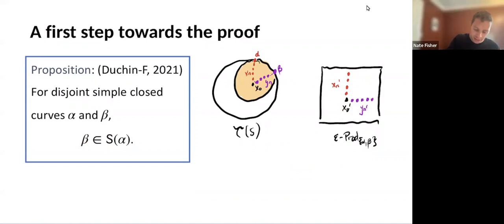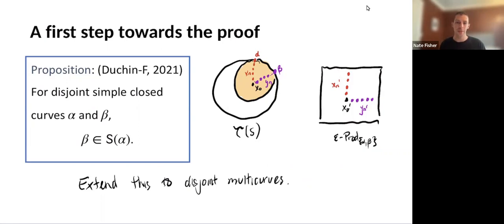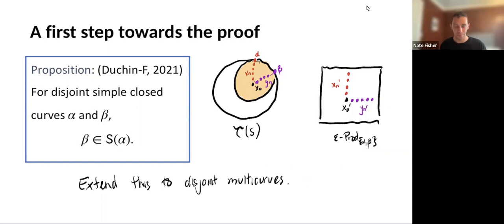Not only is this true for simple closed curves — the same type of argument extends to disjoint multi-curves. If you have two multi-curves which are disjoint (intersection number zero), then they are in each other's stars.